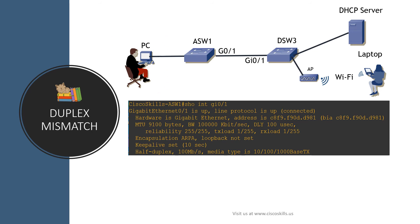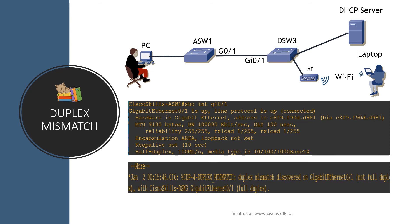A PC user complained that his application started running very slow yesterday. You knew that switch asw1 was replaced yesterday, so you logged into asw1 via the console and checked interface gi0/1 — the interface is up, line protocol is up, status is connected. While trying to find out why it was slow, a message appeared indicating a duplex mismatch between gi0/1 on asw1 and gi0/1 on dsw3. So the duplex mismatch caused the slow application, and you found out because you logged in via the console — but what if you didn't log in via the console? Are there other ways to find out?